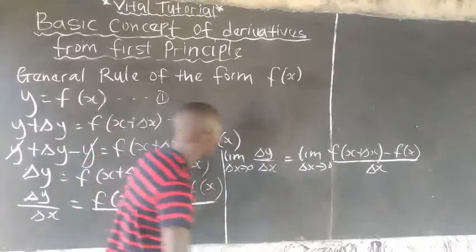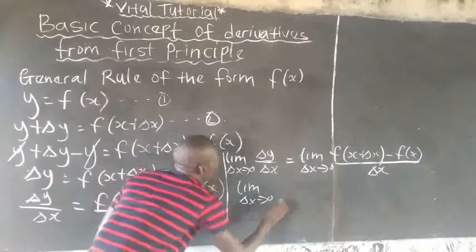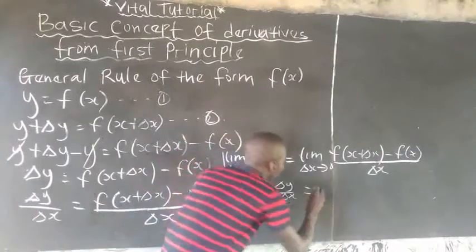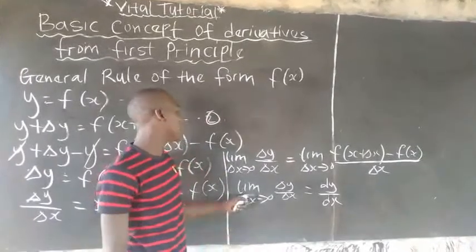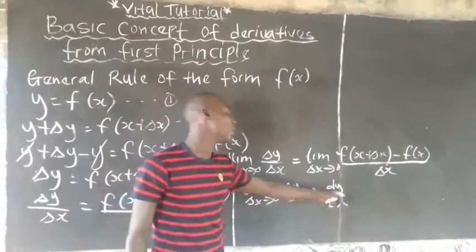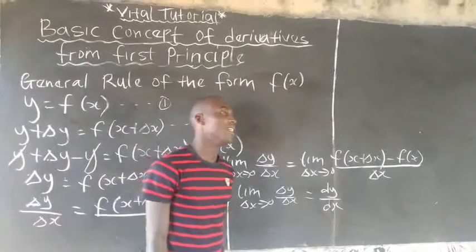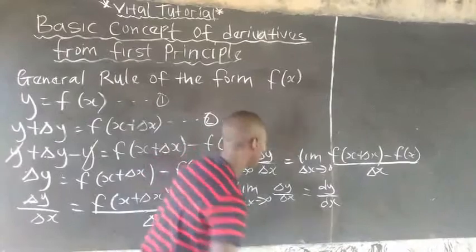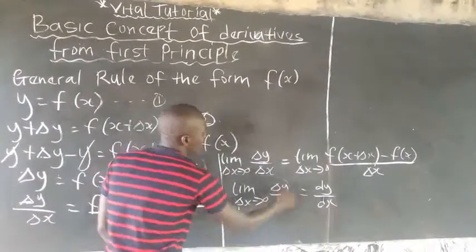Note that the limit as change in s is approaching zero of change in y over change in s, it is nothing but dy/dx. Sometimes they will call it the derivative constant, so I love calling it dy/ds.